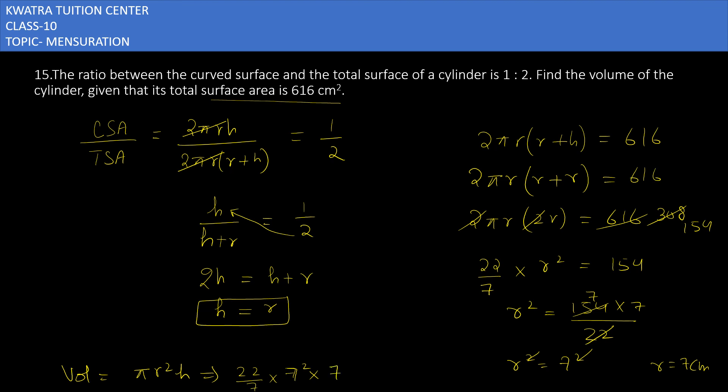So 7 and 7 can be cancelled, giving you 49. So 7 square is 49 into 22, which is 1078 centimeter cube. And yes, this is your answer for question number 15. Now moving to the 16th one.